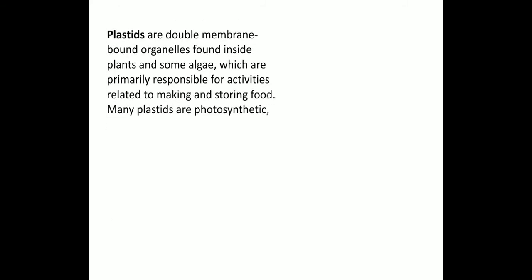Now moving to the next topic: plastids. Before studying plastids, have you ever wondered how plants breathe, drink, eat, and grow? We breathe through our nose and lungs, but plants carry out all these functions in different ways. One category of specialized organelle that plants use to survive is plastids. Plastids are double-membrane-bound organelles found in plants and some algae, primarily responsible for activities related to making and storing food.